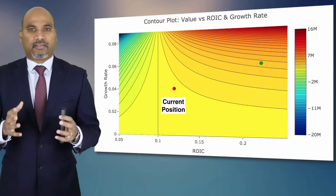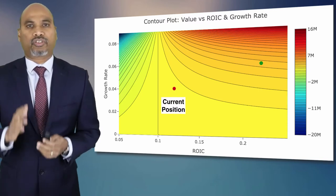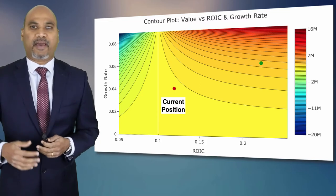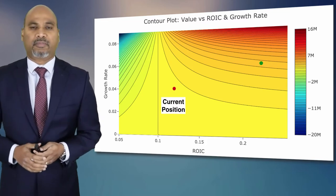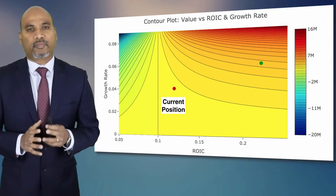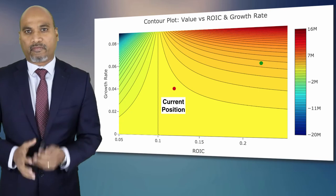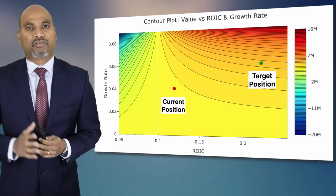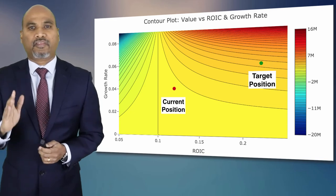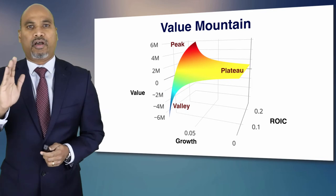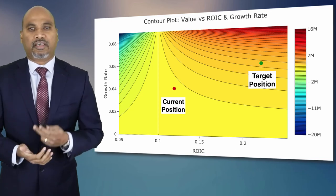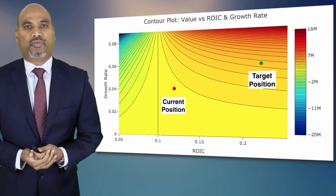You must know where your business operations are on this value map. Whether you bring in a consultant, a Lean Six Sigma expert, Lean Manufacturing, Toyota Production System, Kaizen, or whatever improvement initiative — ensure that those things will move you from your current position to your target position. Have an aim and an ambition of taking your business operations towards the path of the peak. Increase your ROIC, increase your growth rate, and you will be on the path to the peak. Thank you very much.